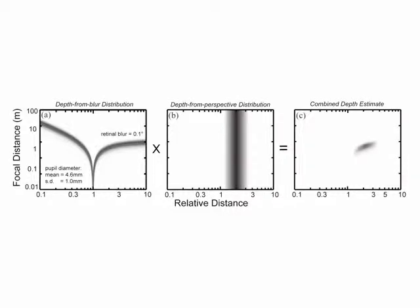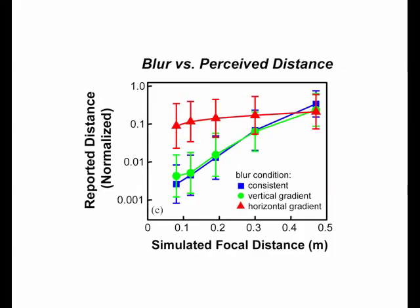Our paper presents a theoretical framework that explains how blur can affect perceived scale. The theory is based on the expected blur produced by the relative distances of objects within large and small scale scenes. We show how this information can be combined with other depth cues to produce an approximation of the scale of a scene. We then describe perceptual experiments that explored the theory's predictions for perceived scale.